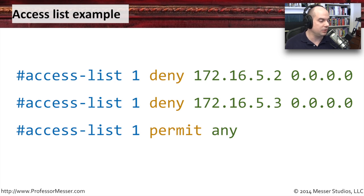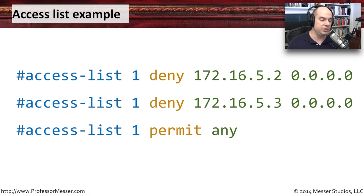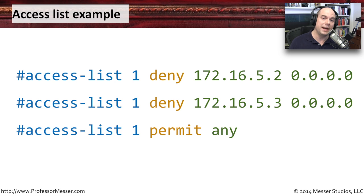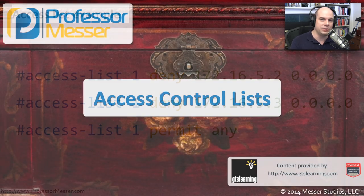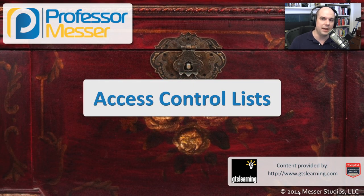And here's the last access control that says permit any — which means if you aren't 172.16.5.2 or 172.16.5.3, everybody else is allowed to communicate. That's a very simple access control list, but it gives you an idea of how a router or firewall goes down that list to allow or disallow access to resources on the network.